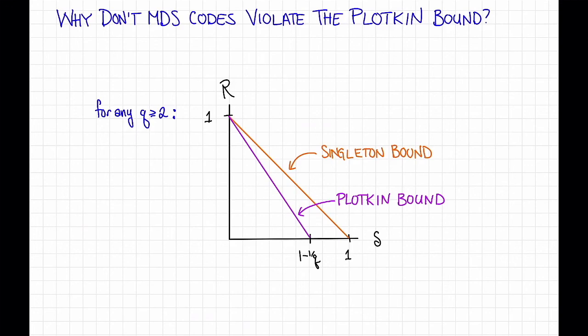As an aside, note that the Plotkin bound implies that any family of MDS codes must have alphabet size growing with the block length. How fast does it have to grow? This is actually an open question. There's a conjecture called the MDS conjecture, which states that Reed-Solomon codes have basically the optimal alphabet size, but it's still open.